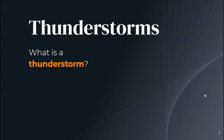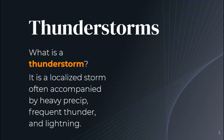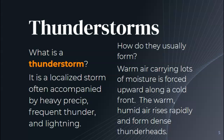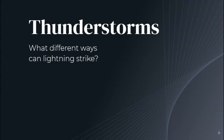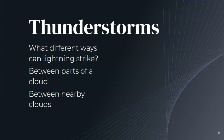Thunderstorms: what is a thunderstorm? It is a localized storm often accompanied by heavy precipitation, frequent thunder, and lightning. We have them all the time around here. How do they usually form? Warm air carrying lots of moisture is forced upward along a cold front. The warm humid air rises rapidly and forms dense thunderheads. There are three main ways lightning can strike: between parts of the same cloud, between nearby clouds, or between a cloud and the ground — which is the one we usually think of.